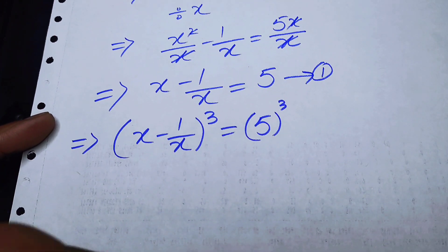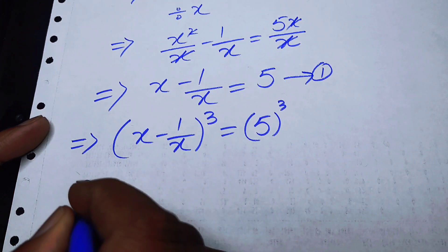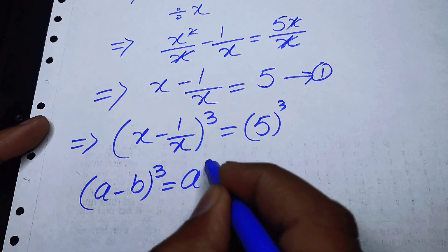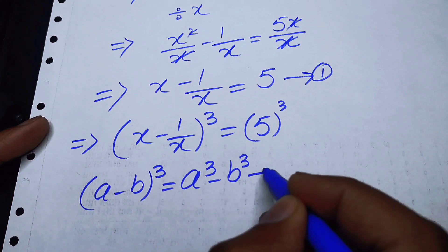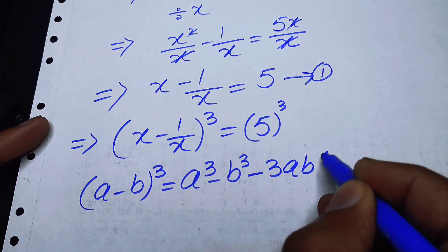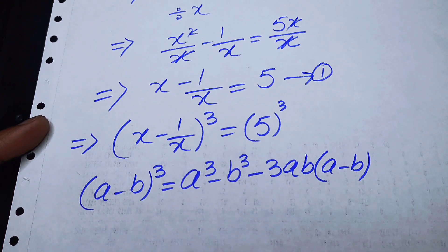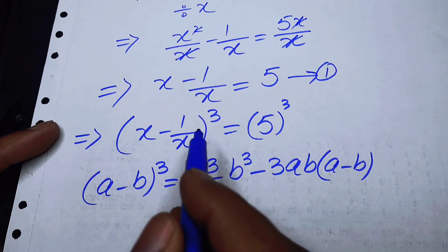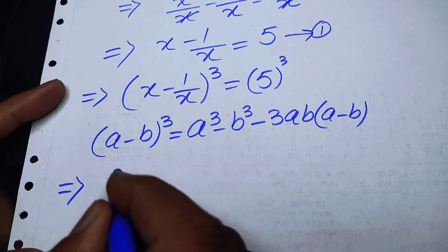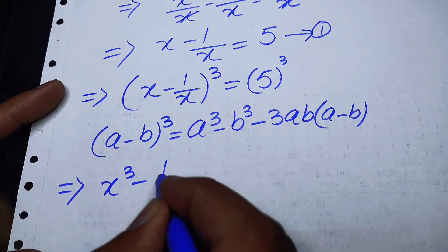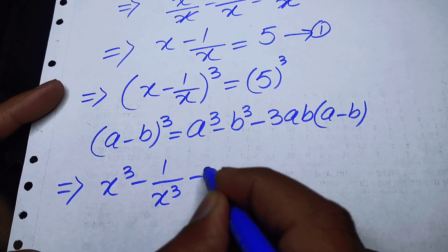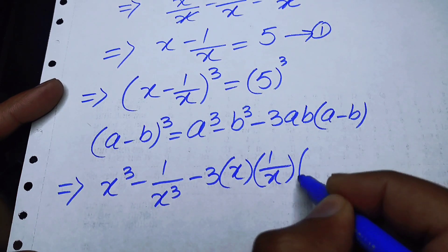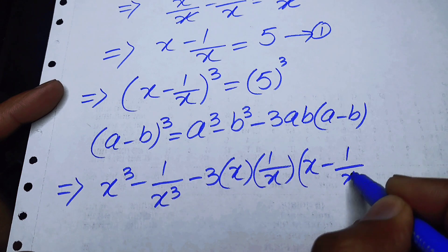Here you remember the famous cubic formula: (a - b)³ = a³ - b³ - 3ab(a - b). I will apply this cubic formula on the left hand side and it will become x cube minus 1 over x cube minus 3 times x times 1 over x, times x minus 1 over x.